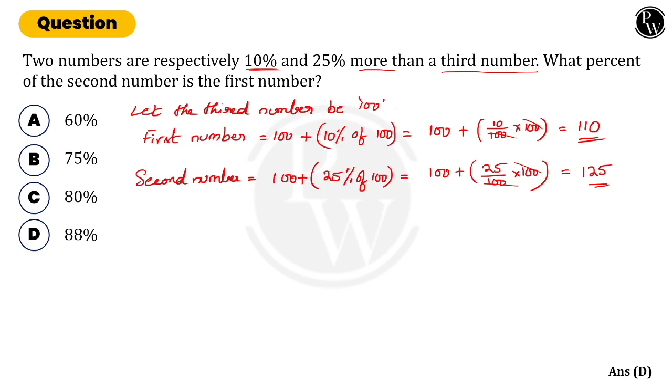Now what percentage of the second number is the first number? We have to find the percentage. So the first number as the percent of second number equals 110 divided by 125 into 100. So 100 cancels with 25 four times. 25 cancels 100 four times and five times here. Then 5 cancels 110 for 22 times. So 22 into 4 is 88%. Option D is the right answer. Thank you.